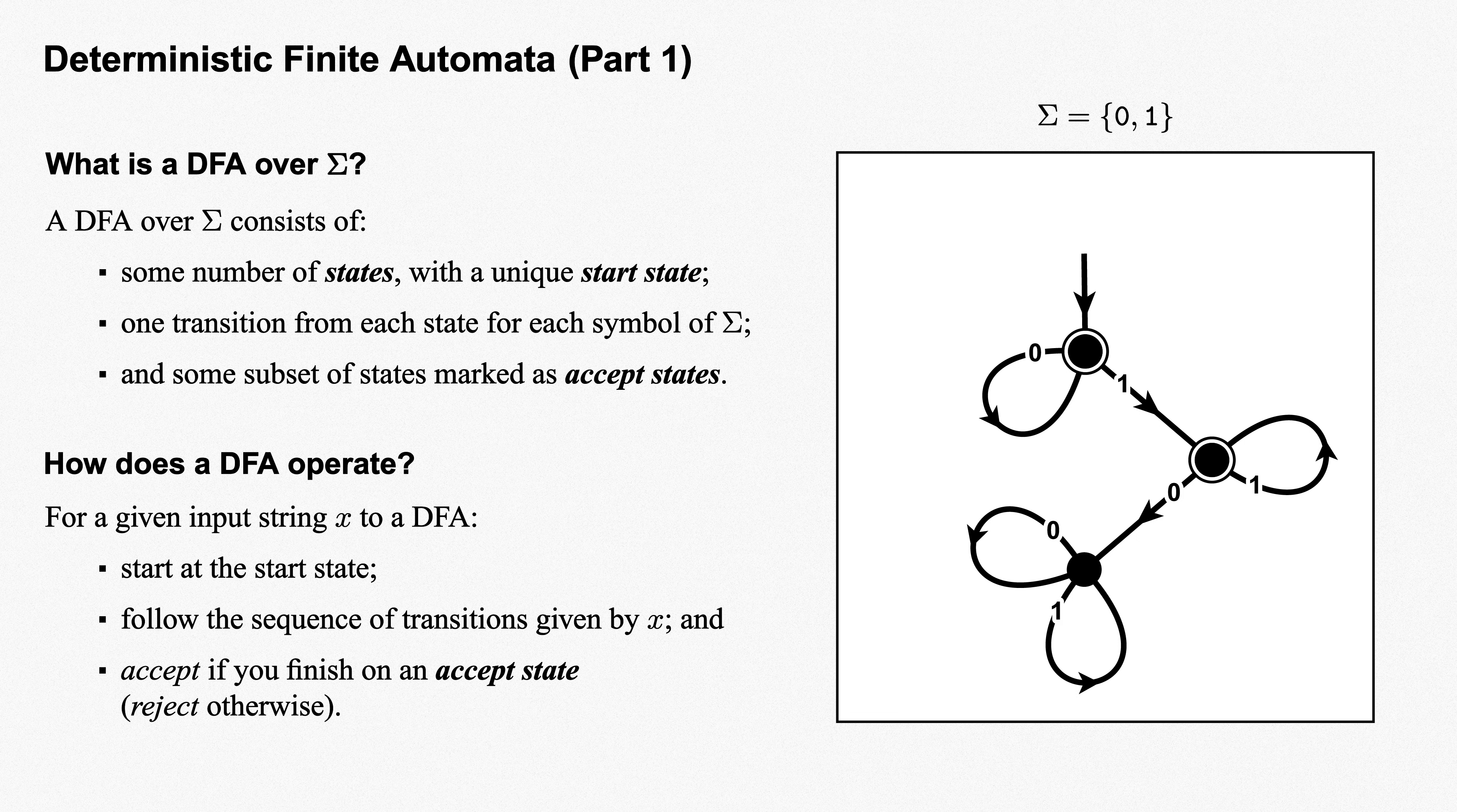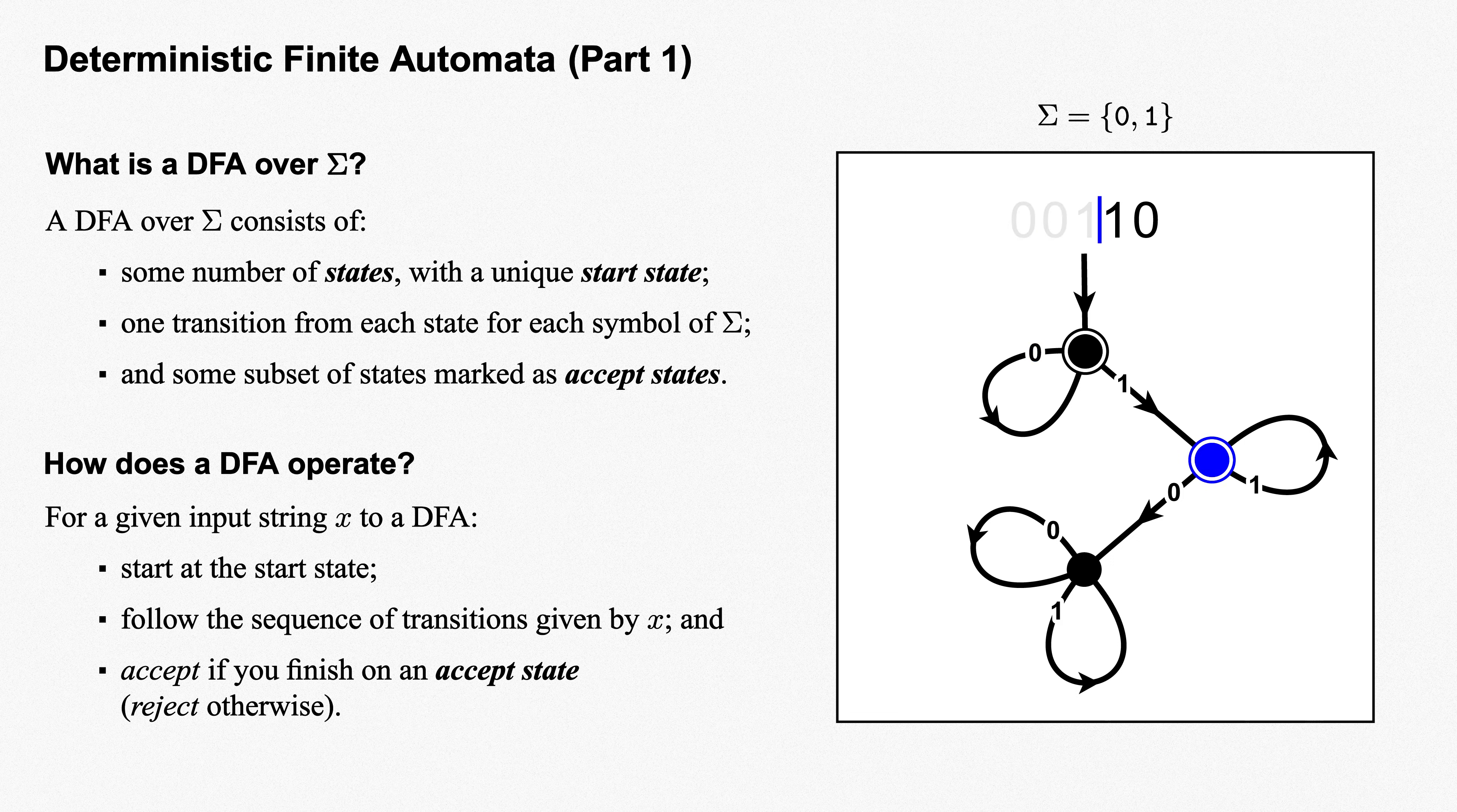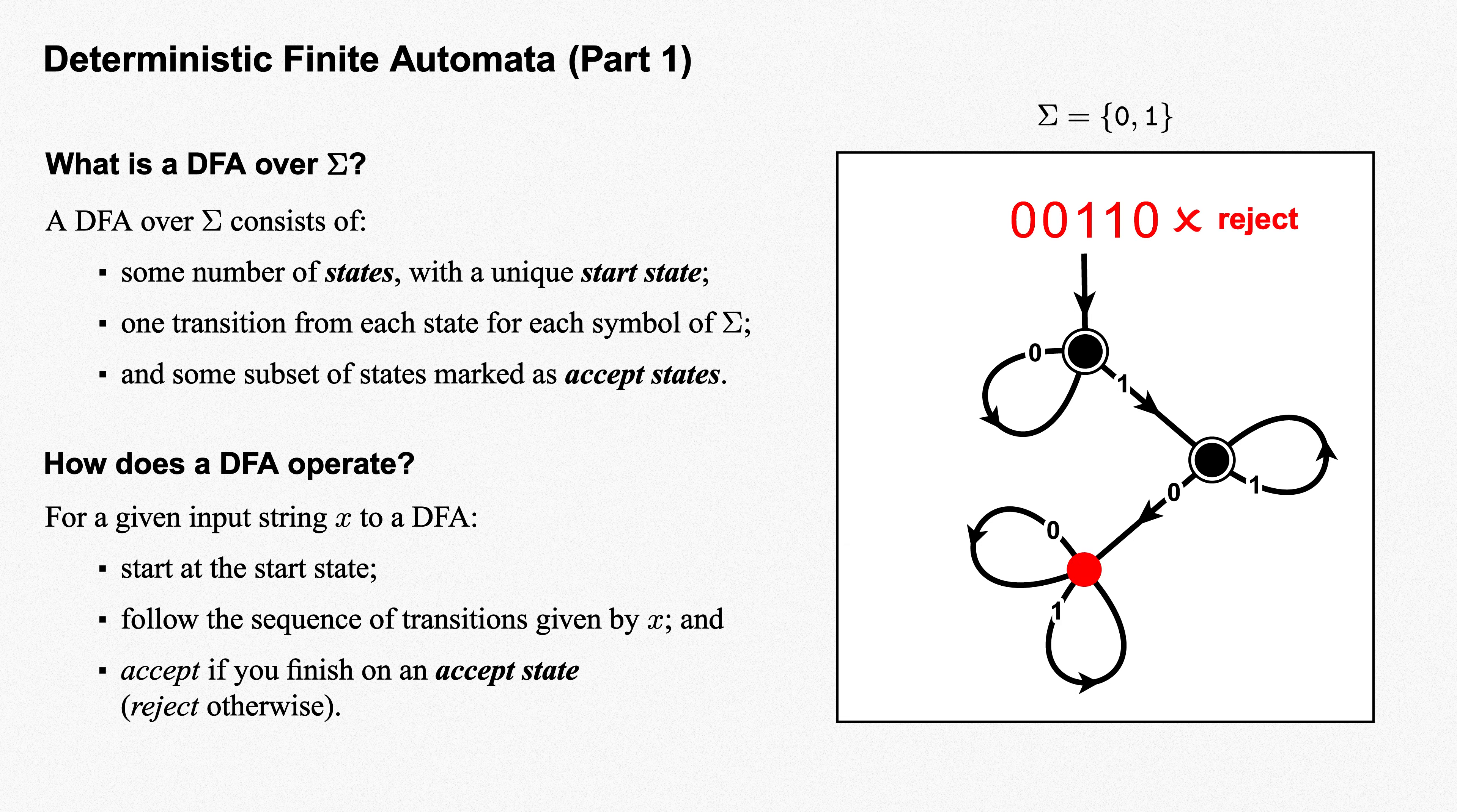In this way, each input string sends us on a walk around our DFA, from the start state to some final state, and that final state determines whether or not the string is accepted. How about the string 00110? Again, we start at the start state. The two zeros both send us back to the start state. The first one sends us to the state at the right, and the second one keeps us there. Finally, the last zero sends us to the bottom state. This state is not an accept state, so our DFA rejects the string 00110.